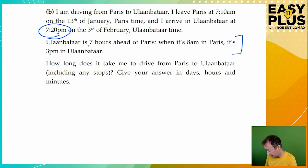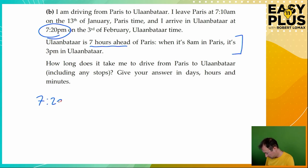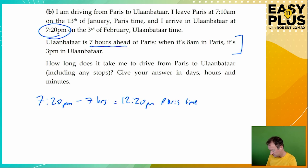Ulaanbaatar is seven hours ahead of Paris. Crucially, it says when it's 8 a.m. in Paris, it's 3 p.m. in Ulaanbaatar. We need to take the Ulaanbaatar time and subtract seven hours. So if in Ulaanbaatar it's 7:20 p.m. and we subtract seven hours, we get 12:20 in the afternoon — just after midday. And that tells us what that time is in Paris time.